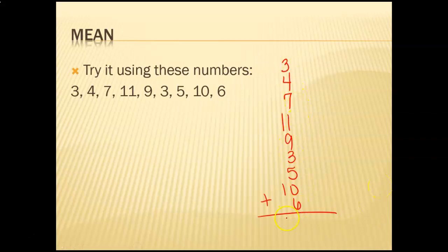If we added up all these numbers, you should have got a total of 58. And how many numbers did we add together? Nine. So when I take 58 divided by 9, rounded to the nearest hundredth, you should have got 6.44. So that was a review of mean — the first word in our title, mean absolute deviation. We're going to be doing something with finding the average.